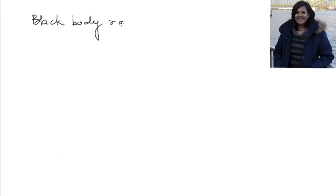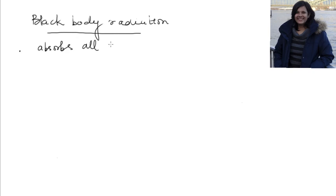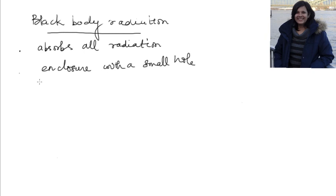The first question which comes to our mind is: what is a black body? A surface which absorbs all radiation incident upon it can be termed as a black body. Now, I can take an enclosure made up of some suitable refractory material and make a small hole in it. With that small hole, any light incident from outside will be almost completely absorbed by multiple reflections inside the enclosure. So this enclosure appears more or less like a black body.